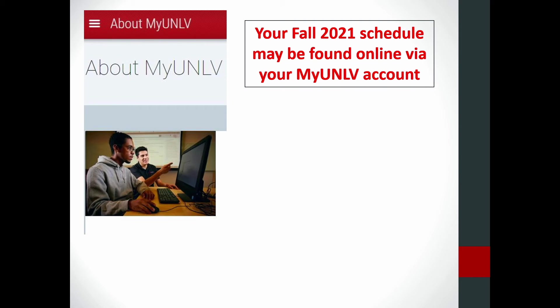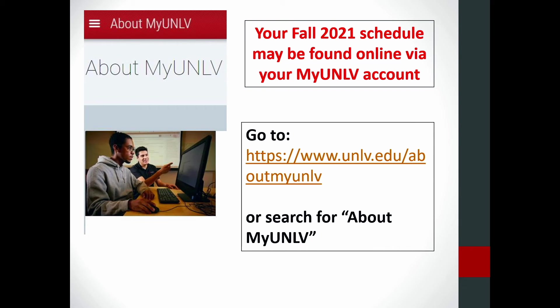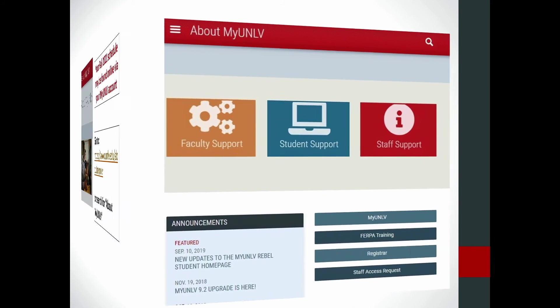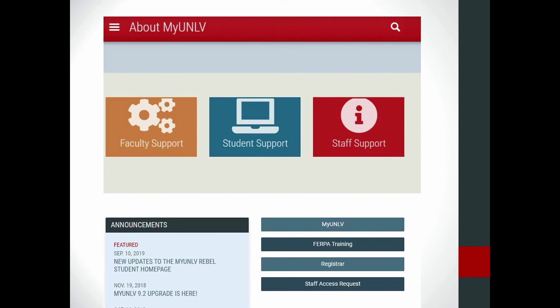Your Fall 2020 schedule can be found online via your myUNLV account. You can use the web link address shown, or simply do a Google search for myUNLV and click on the main webpage link. Once on the myUNLV webpage, scroll down to find student support tutorials. In the lower right-hand side, you'll find a link to the login page — it may be good to bookmark this link as you will use it throughout your time at UNLV.